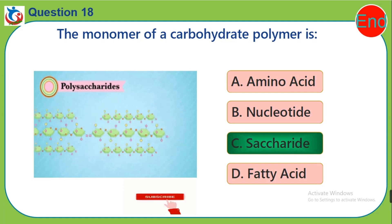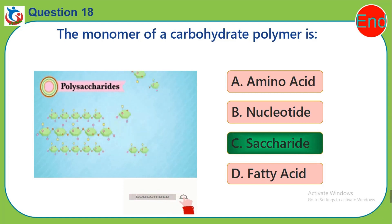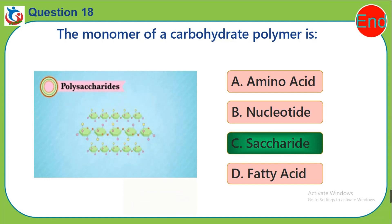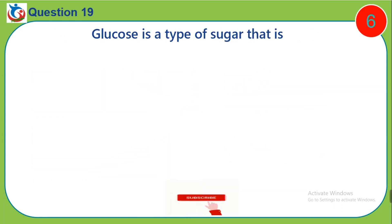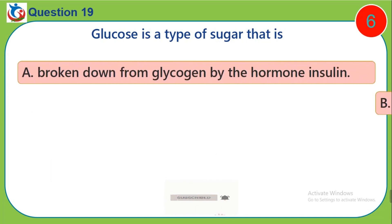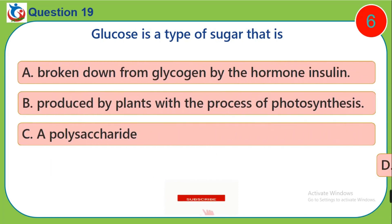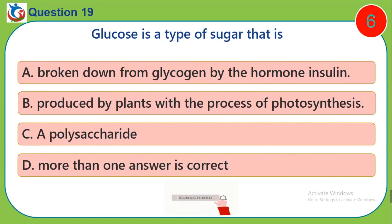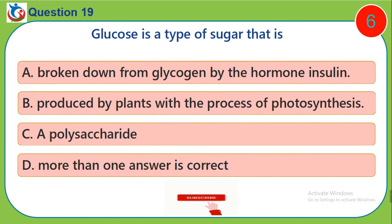Other levels of this topic will be displayed on your screen at the end of this video. Endeavor to watch them also. Question 19. Glucose is a type of sugar that is: A. Broken down from glycogen by the hormone insulin. B. Produced by plants with the process of photosynthesis. C. A polysaccharide. D. More than one answer is correct.